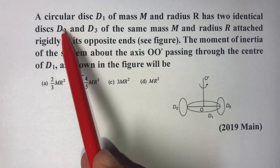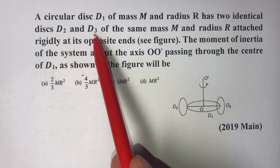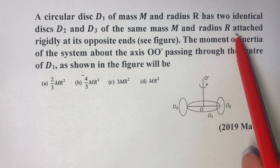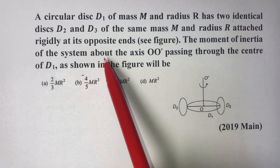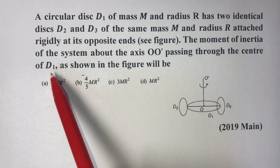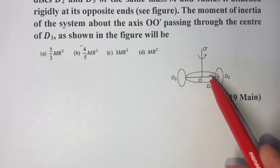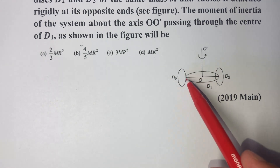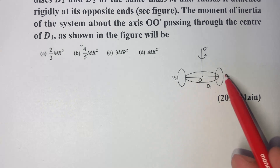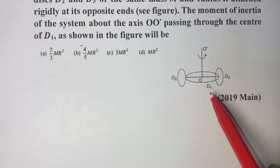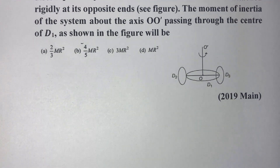Hello friends. In today's question, a circular disk D1 of mass m and radius r has two identical disks D2 and D3 of the same mass m and radius r attached rigidly at its opposite ends. We have to find the moment of inertia of the system about the axis OO' through the center of D1. D1 is horizontal, while D2 and D3 are vertical and attached at the opposite ends of the diameter.